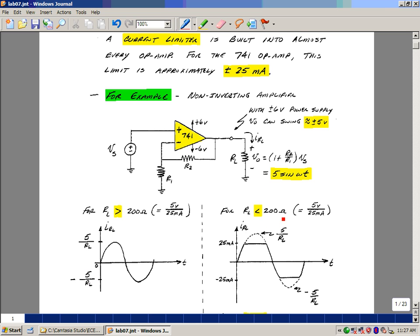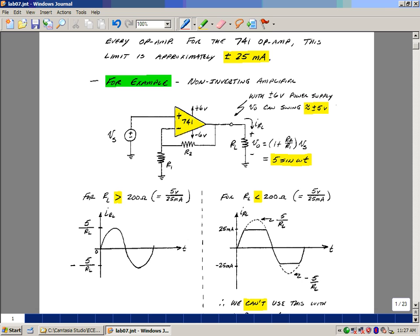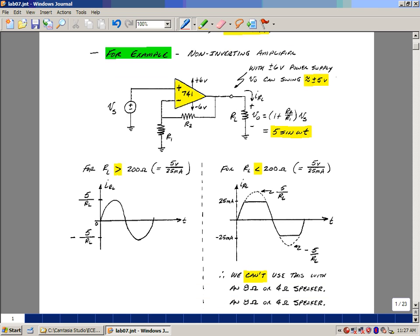If you had something less than 200 ohms, the current limiter kicks in, and once you reach 25 milliamps, it won't give you any more and basically chops the waveform off at that point. So if we had an 8 ohm speaker or a 4 ohm speaker, we wouldn't be able to get a full signal across the speaker. What we're going to do is add some transistors.